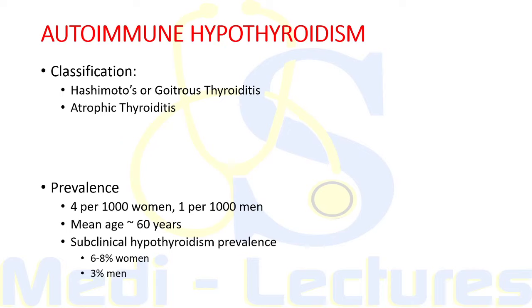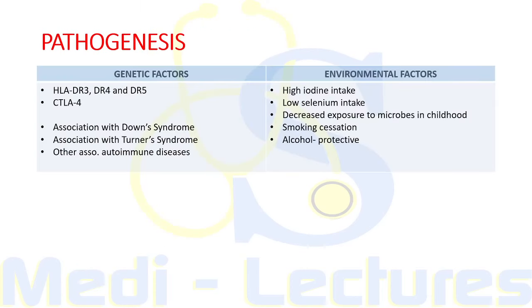Autoimmune hypothyroidism has a prevalence of 4 per 1000 women and 1 per 1000 men, so it is 4 times more common in females. Mean age of onset is 60 years. Subclinical hypothyroidism prevalence is 6 to 8% in women and 3% in men. As with other autoimmune diseases, both genetic and environmental factors play a role in the pathogenesis of thyroiditis.